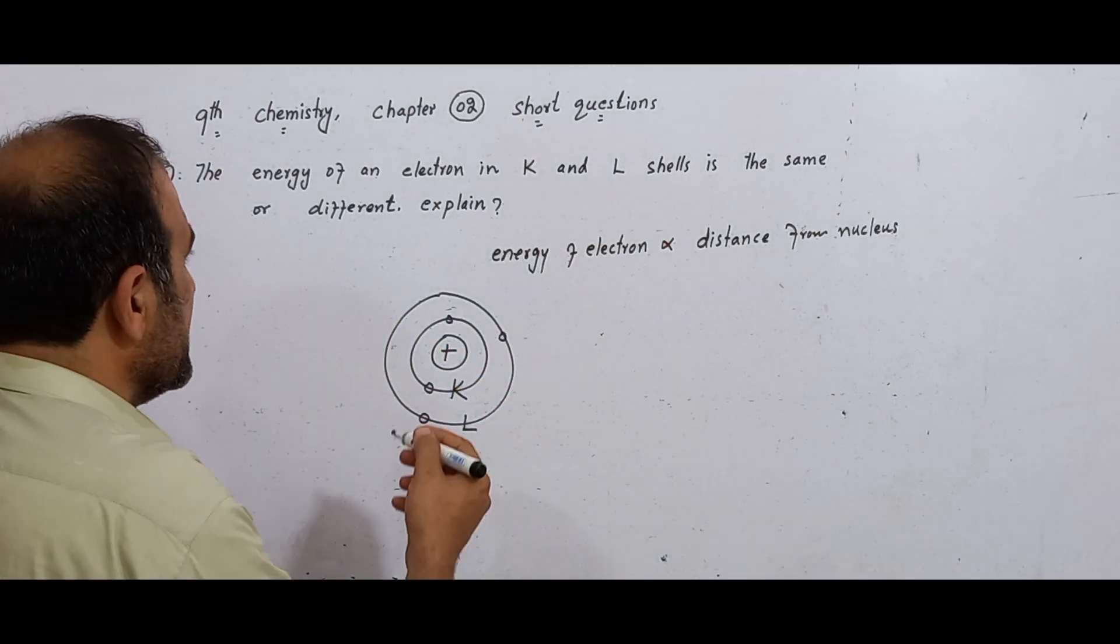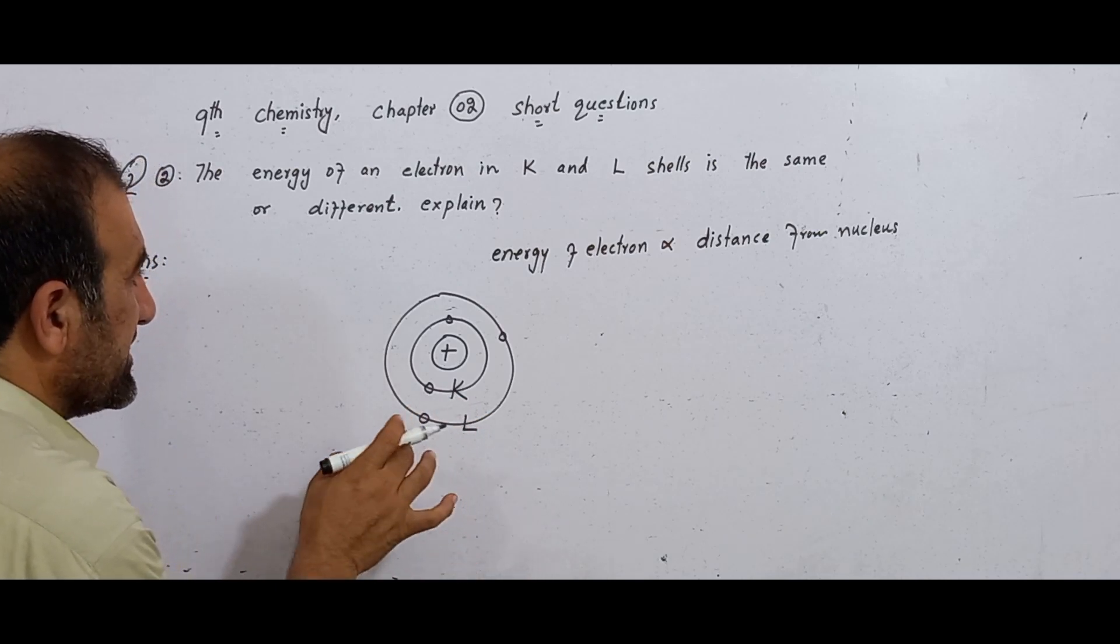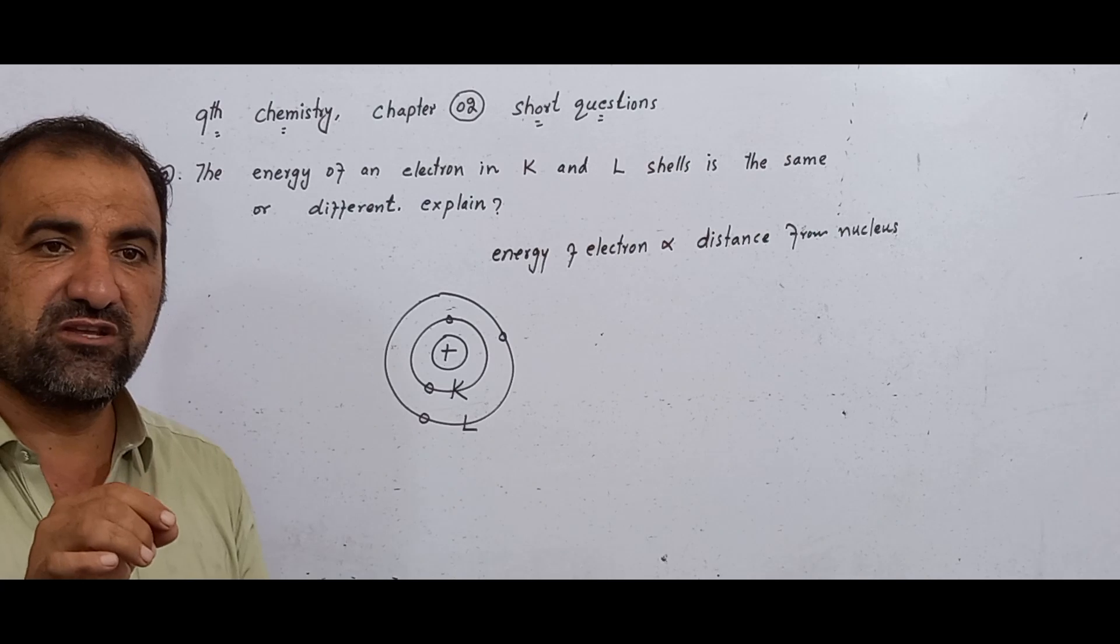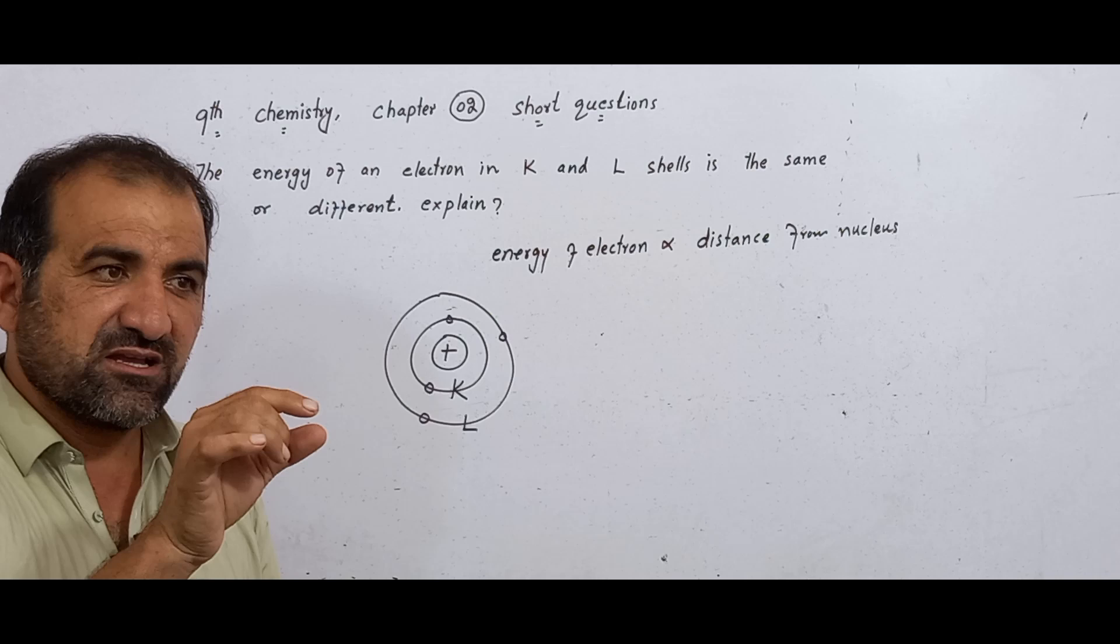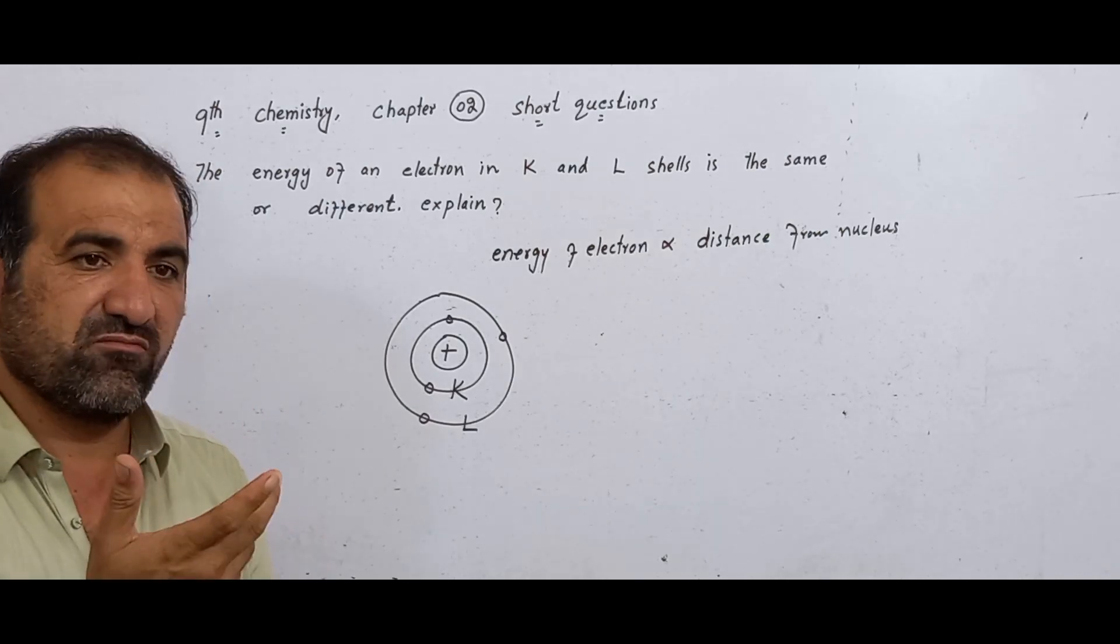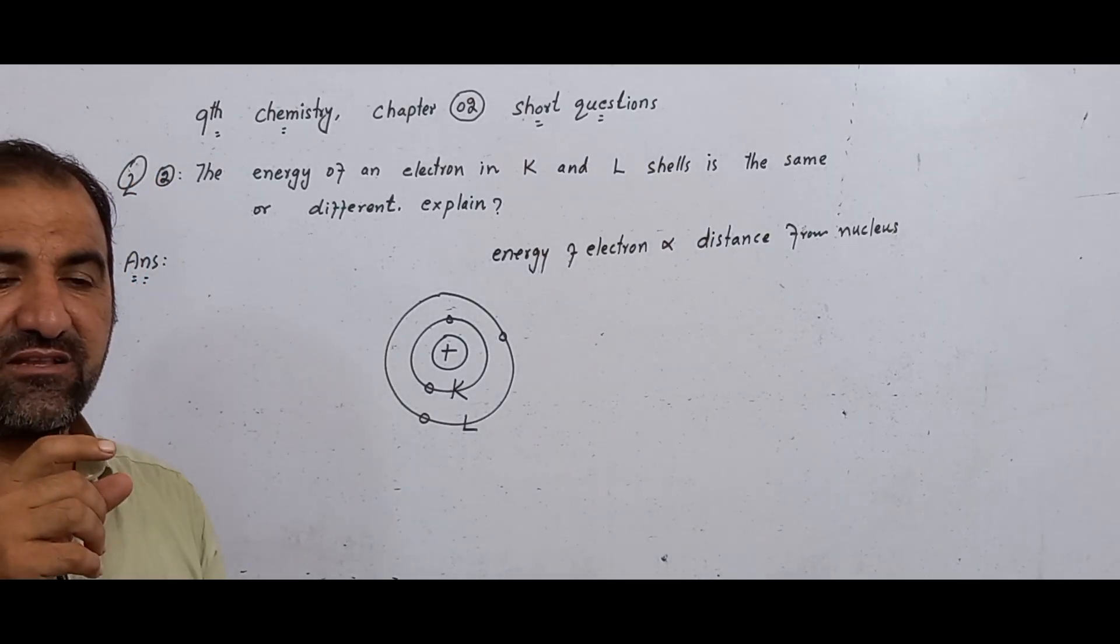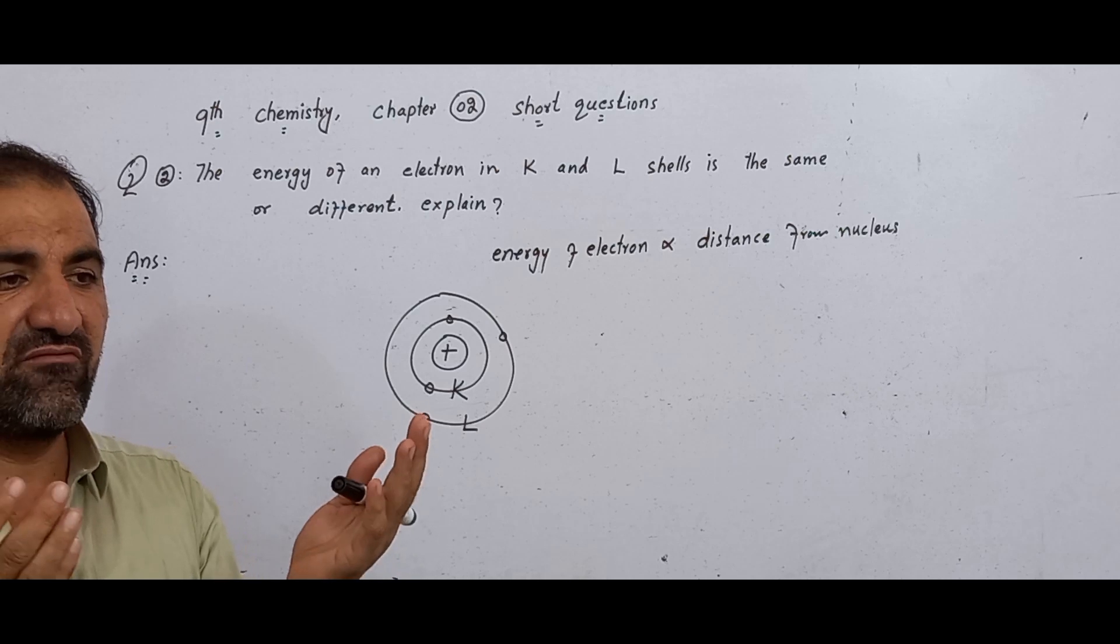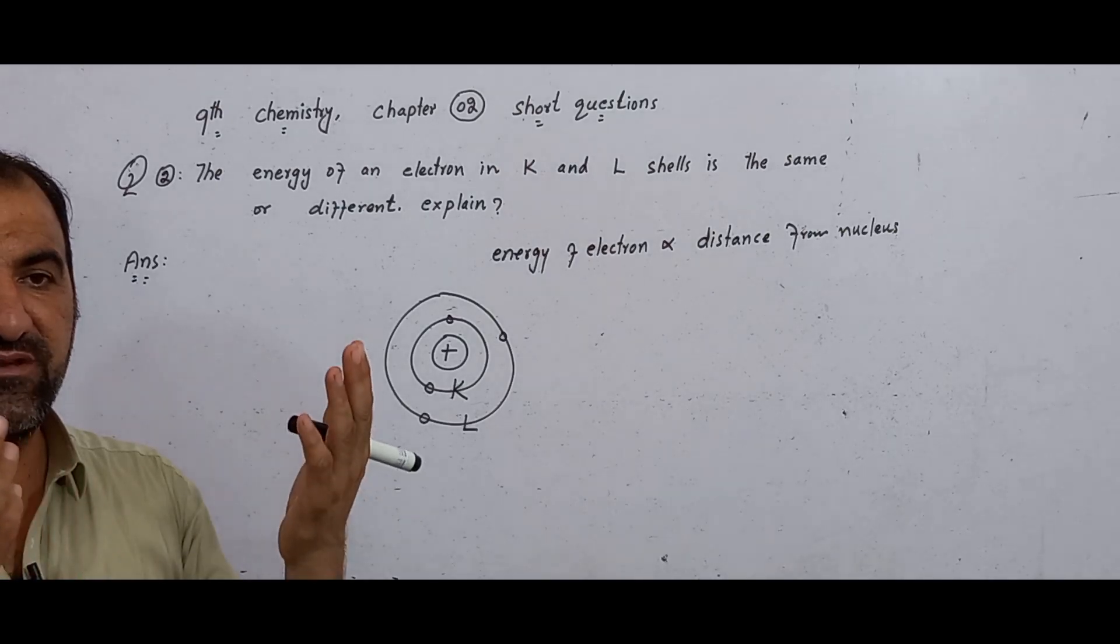Now the energy of electron in L-shell will be higher than the energy of electron in K-shell because K-shell is near to the nucleus and when the electron is near to the nucleus then their energy will be low. The energy of electron in L-shell will be high because L-shell is away from the nucleus and when electron is away from the nucleus then their energy will be high.